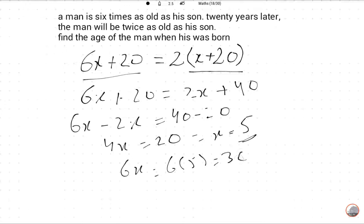So his father is 30 years and the son's age is 5 years. So after 20 years, the age of the man when his son was born, so now the son's age is 5, so when he was born, the man's age will be 30 minus 5, so it is 25 years old. Wow, great!